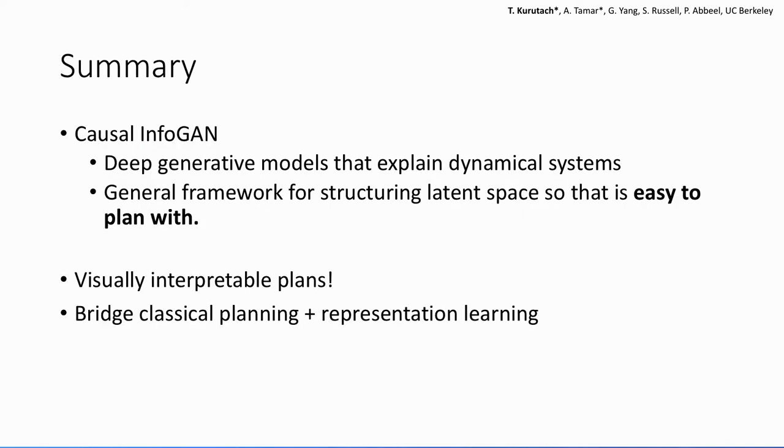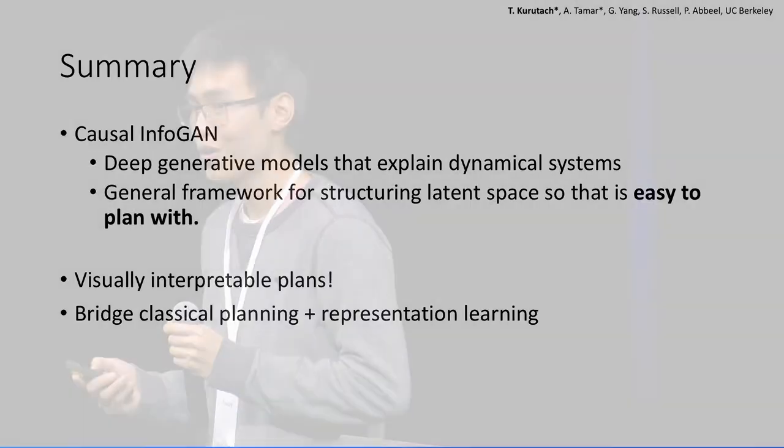So to summarize, we've proposed these Causal-InfoGANs that are deep generative models that can explain causality in the data. This is a general framework for structuring the latent space so that it is easy to plan with. The plans are visually interpretable, and this is an attempt to bridge the gap between classical planning and representation learning.